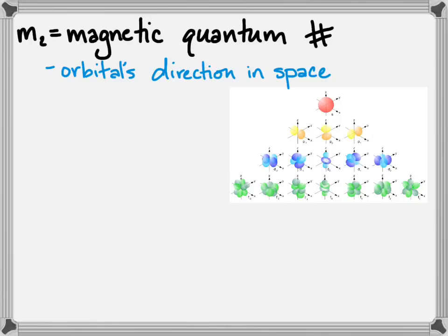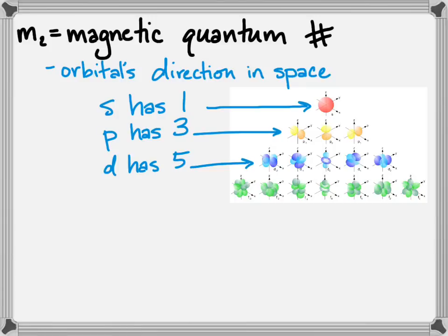If you're looking at the orbital shapes, s has 1 different orientation, because it's just a sphere. p has 3 different orientations. Orbital d has 5 different orientations. And orbital f has 7 orientations.